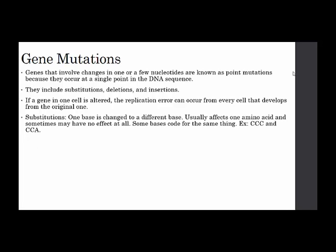With substitutions, one base is changed to a different base. It usually affects one amino acid, and sometimes may have no effect at all, because some bases code for the same thing. For example, CCC and CGA can both code for the same amino acid.